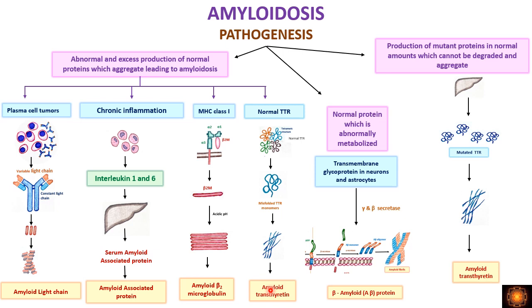The next category is normal protein that is abnormally metabolized. Here we have a transmembrane glycoprotein in neurons and astrocytes. This protein is normally metabolized into a soluble component, but if alpha and beta secretase activity breaks it down, it produces beta amyloid monomers which are insoluble. These aggregate and form amyloid fibrils.